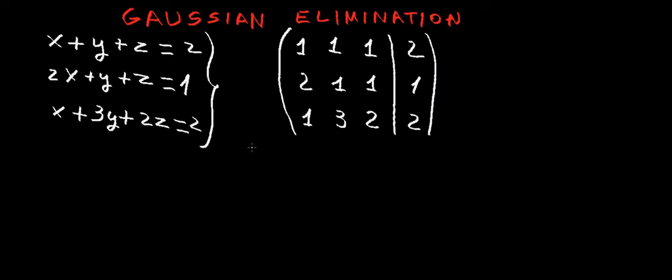Hello. In this video I'm going to show you the main principles of Gaussian elimination, which is a method used to solve systems of simultaneous equations like this one here on the left-hand side, where we have a number of unknowns — in this case x, y, and z — and some independent terms which are the right-hand side: the 2, 1, 2.